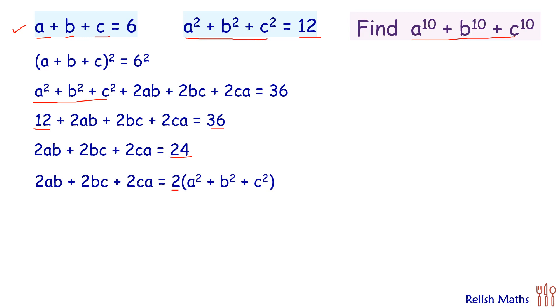So the right-hand side becomes 2 times a squared plus b squared plus c squared. Let's take everything, all the variables on one side. Now here this 2a squared will split, this 2b squared and 2c squared.